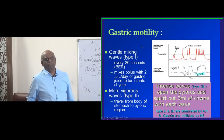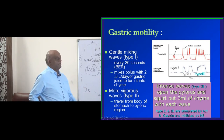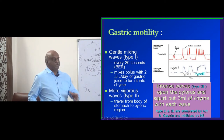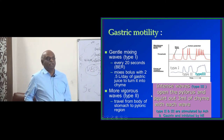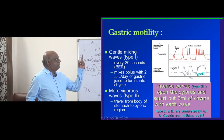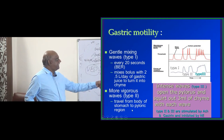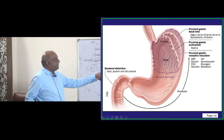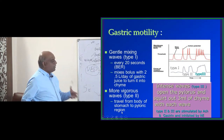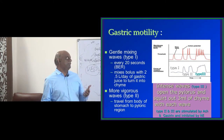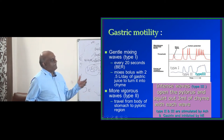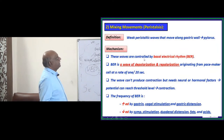There are gentle mixing waves every 20 seconds. They mix the bolus with the two-and-a-half liters per day of gastric juice to turn it into chyme. Then more vigorous waves travel from the fundus to the body and from the body to the pyloric area. By the time they reach the pyloric area, they become type 2 waves — but they originate in the fundus.